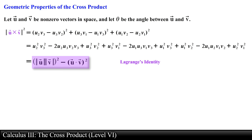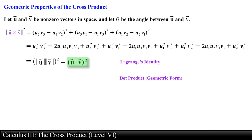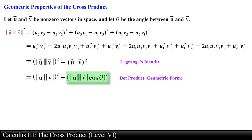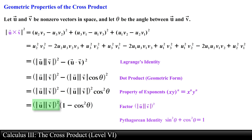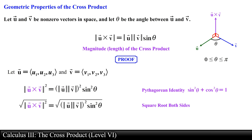Now we rewrite the right-hand side using the geometric definition of the dot product: vector u dotted with vector v equals the magnitude of vector u times the magnitude of vector v times cosine of theta. Using properties of exponents and factoring out the product of the magnitudes squared, we replace 1 minus cosine squared theta with sine squared theta using the identity sine squared plus cosine squared equals 1. Taking the square root of both sides — and since theta is between 0 and pi, the square root of sine of theta is always positive — ends the proof.